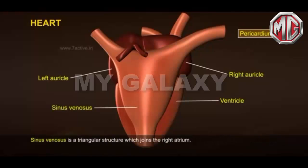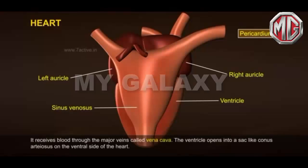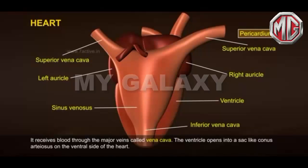The sinus venosus is a triangular structure which joins the right atrium. It receives blood through the major veins called vena cava. The ventricle opens into a sac-like conus arteriosus on the ventral side of the heart.